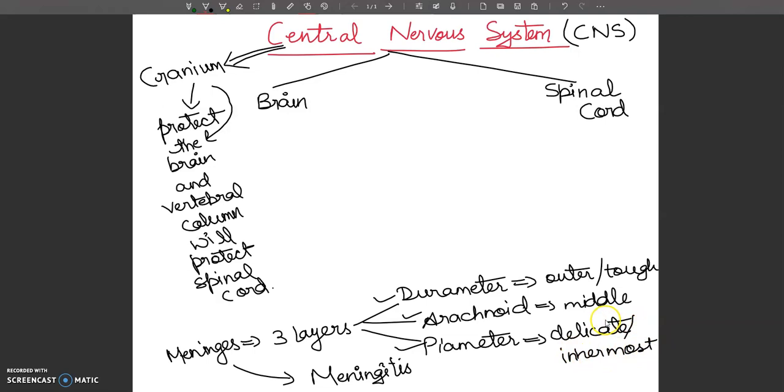Next, the space between Arachnoid and Piameter is called the subarachnoid space. The fluid filled in this space is called CSF, which means cerebrospinal fluid.